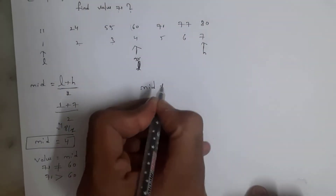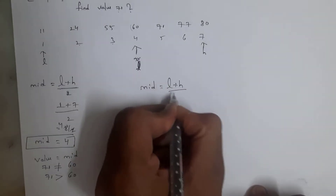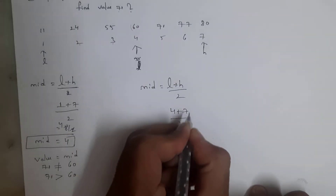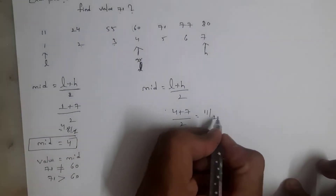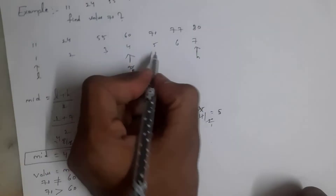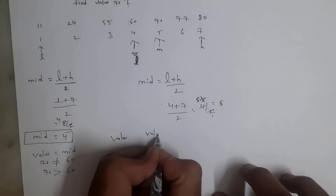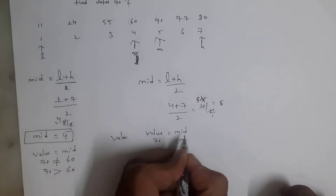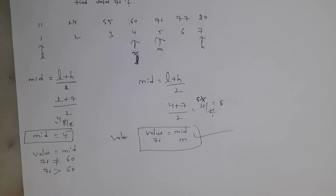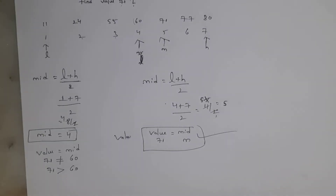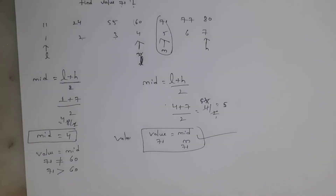Again we need to find mid. Formula: mid = (lower + higher) / 2 = (4 + 7) / 2 = 11 / 2 = 5.5 — don't consider elements after the decimal point, so mid is 5. The value we need to find is 71, and the mid element at position 5 is 71. Since value equals mid, we found the element. The mid value is 71. This is how we search a particular element using binary search.